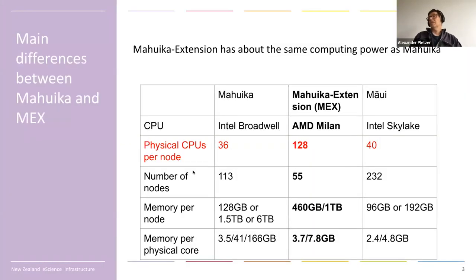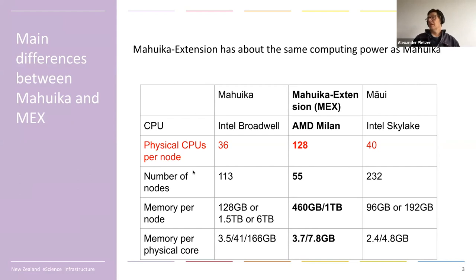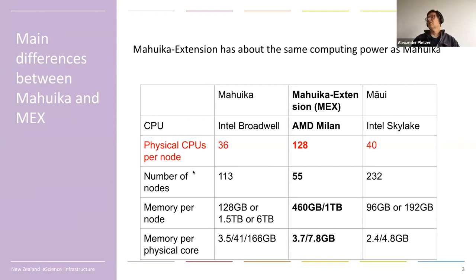The most important part is that it's an extension that sits in between Mahuika and Maui. We always looked at Mahuika as being our capacity platform — lots and lots of jobs, but not necessarily big jobs. Maui is our capability platform, which tends to run a smaller number of jobs, but much larger — many more processes. There are some other differences in terms of hardware architecture and so forth.